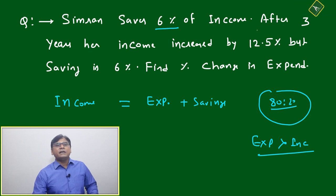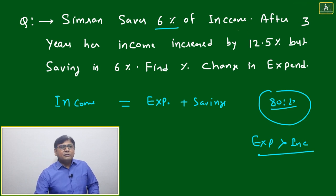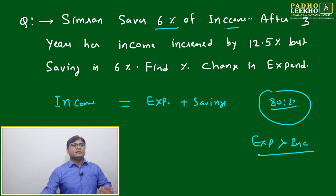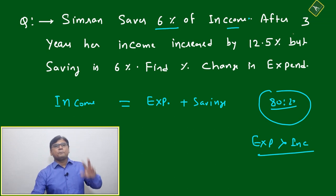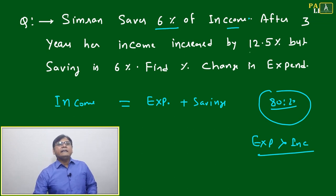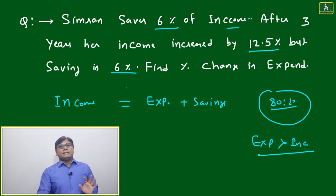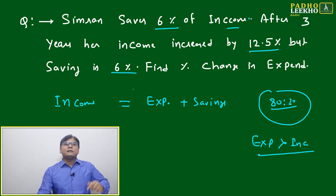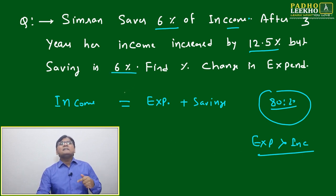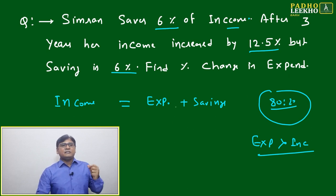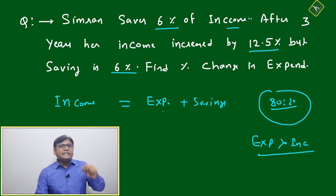Now the question states: Simran saves 6% of her income. After three years, her income increased by 12.5%, but her savings remain at 6% of the original income — savings are still 6%. We need to find the percentage change in expenditure.